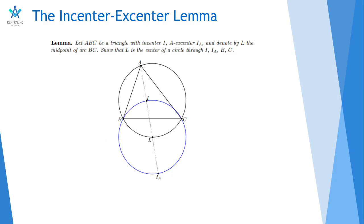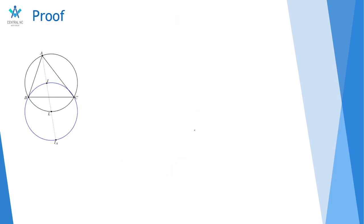And this is the lemma right here. So let ABC be a triangle with incenter I, excenter I_A, and denote by L the midpoint of arc BC. So this whole circle right here is the circumcircle of ABC. We have that. We want to show that L is a circle that passes through I, I_A, B, and C. And it does exist, but we want to prove it just so you know how it works. So let's move on to the proof here.